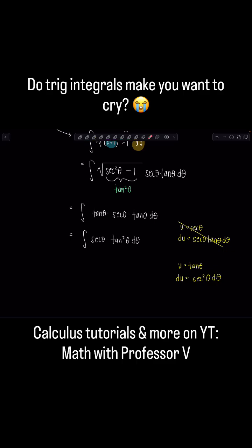Then next option, if u is tangent theta, okay, I got one of those. Du is secant squared theta, no. I can't make that happen with one tangent and one secant left over. So that won't work either.